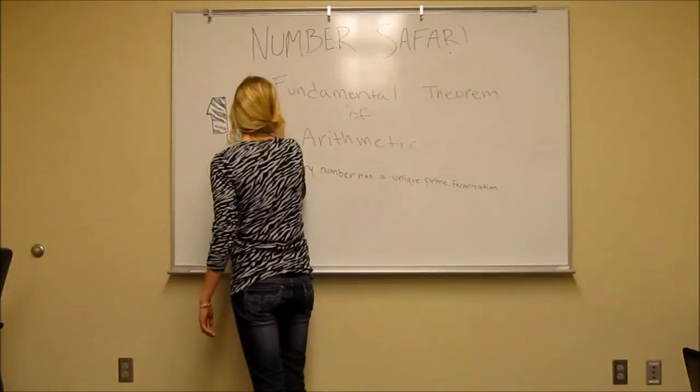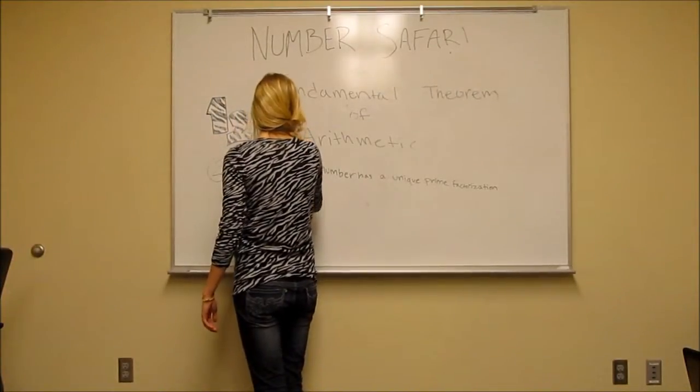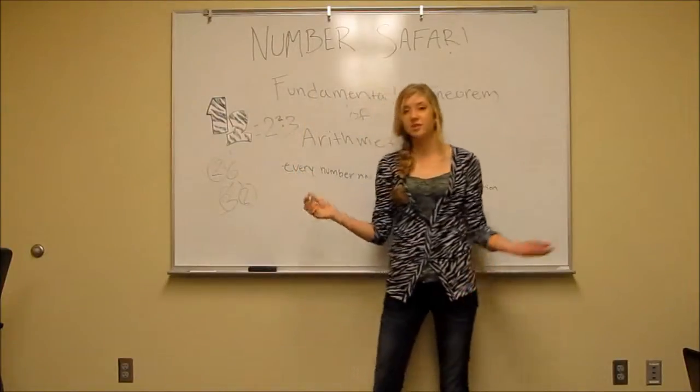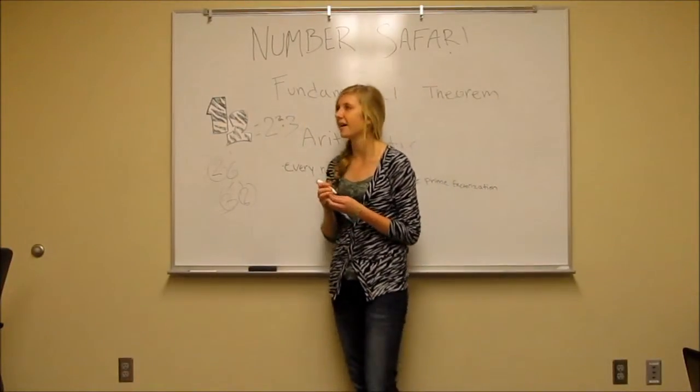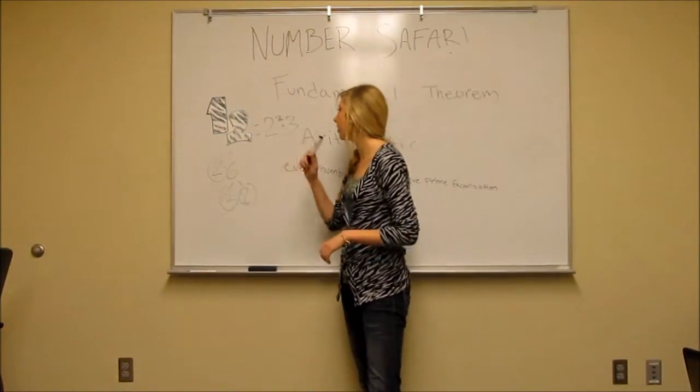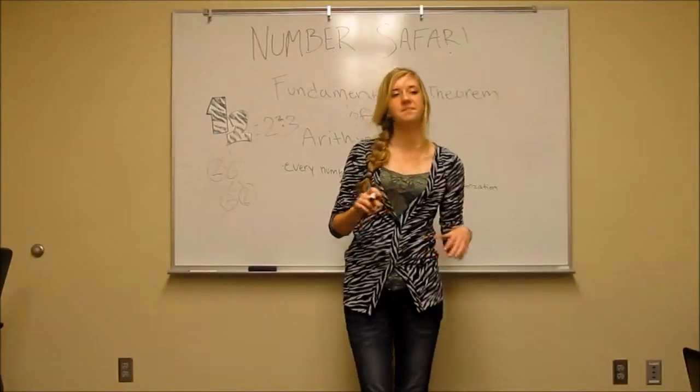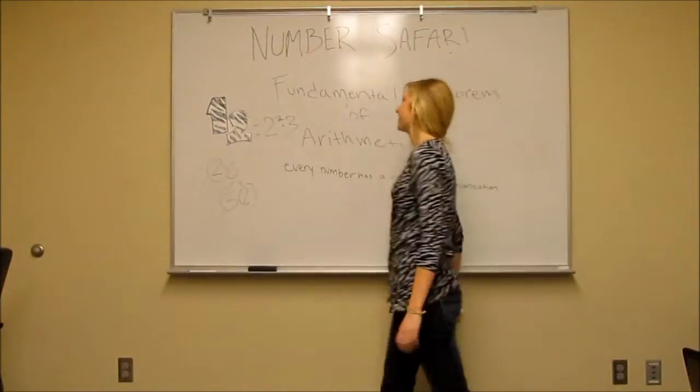Now no other number in the world will have the same combination of 2 squared times 3. This is useful because when we find this it will help us to find other factors of 12 such as 4 or 6. So that is the fundamental theorem of arithmetic.